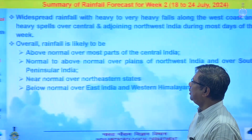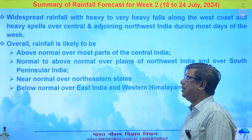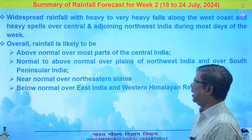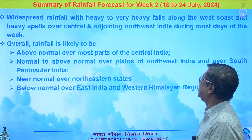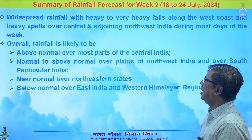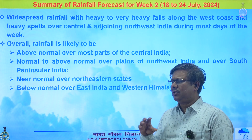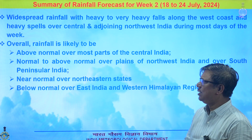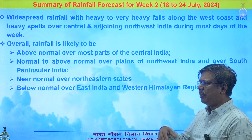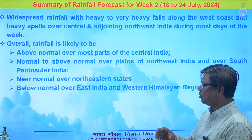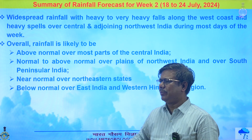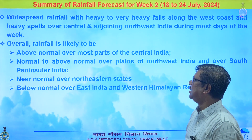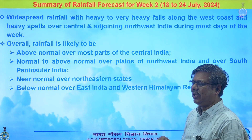For the second week, widespread heavy to very heavy rainfall pulses will be there over the west coast, and central and adjoining northeast India on most of the week. Overall, above normal rainfall is expected over most parts of central India, normal to above normal over the plains of northwest India and south peninsular India except Tamil Nadu, near normal over northeastern states, and below normal over east India and the western Himalayan region.